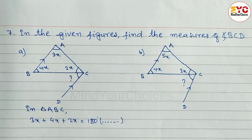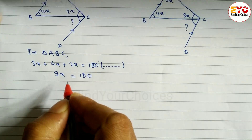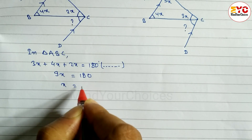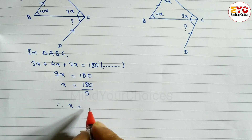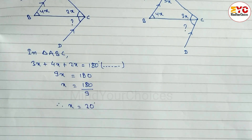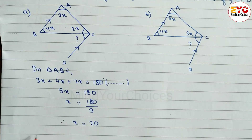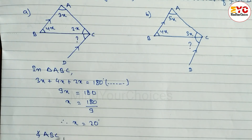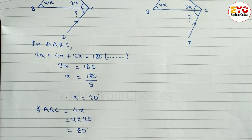The reason is the sum of angles of a triangle equals 180 degrees. So 4 + 3 + 2 = 9, giving us 9x = 180. Dividing both sides by 9, we get x = 20 degrees. Now we find angle ABC, which equals 4x.